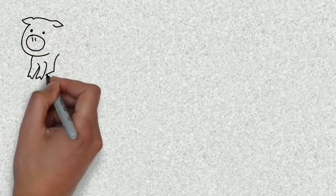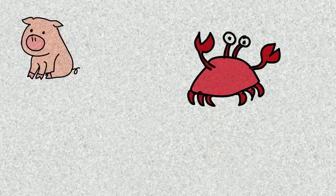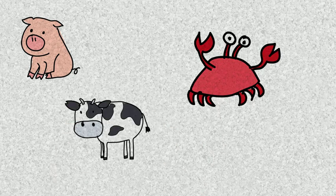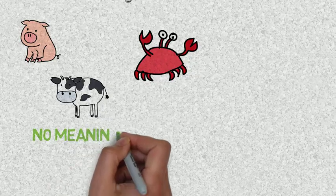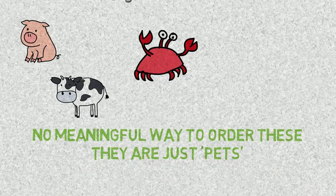Similarly, with the example here of the pets that people might own, they might own a pig, they may own a crab, they may own a cow. There is no meaningful order to these particular labels. They're just the types of pets that people might own.